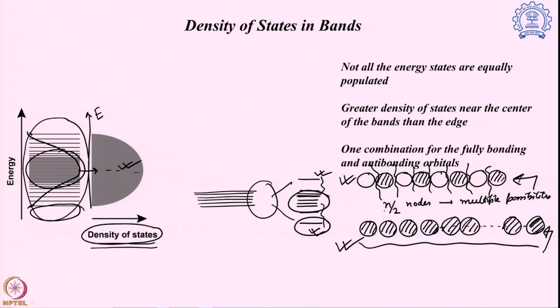Looking at how energy is dispersed with number of electrons: at the very edges there is only one possibility, then it slowly increases, reaching a maximum exactly at the middle of the band, then slowly goes down again. This is shown by the density of states function, where the y-axis shows energy and the x-axis shows the number of possible states. The density of states gives a true picture of how electrons are arranged in a solid — not only with respect to energy but also with respect to number, since band structure alone does not correctly show where most electrons are situated.